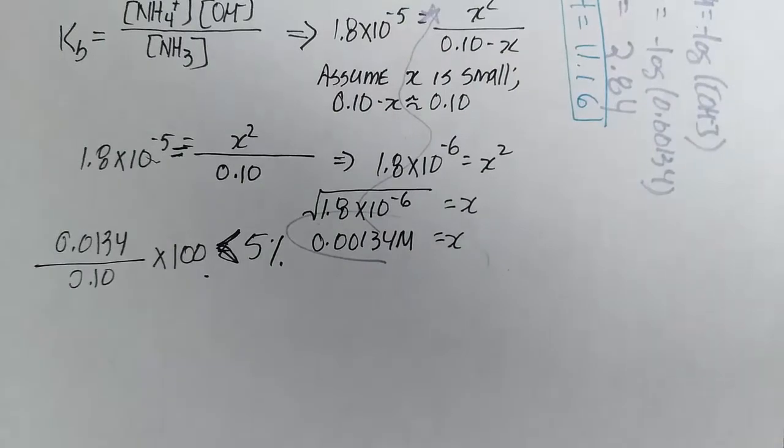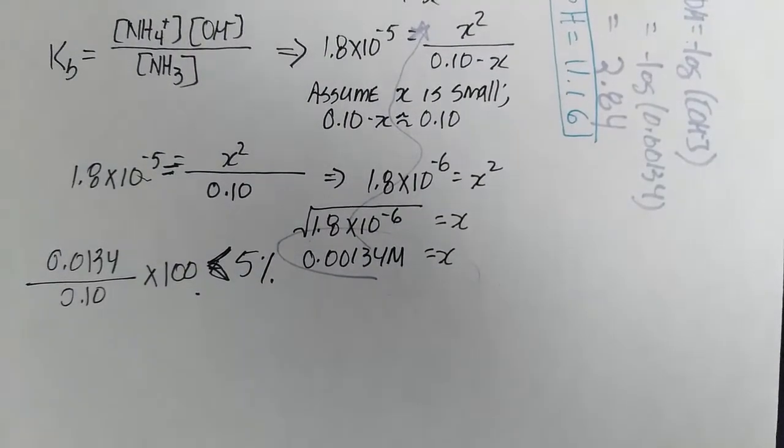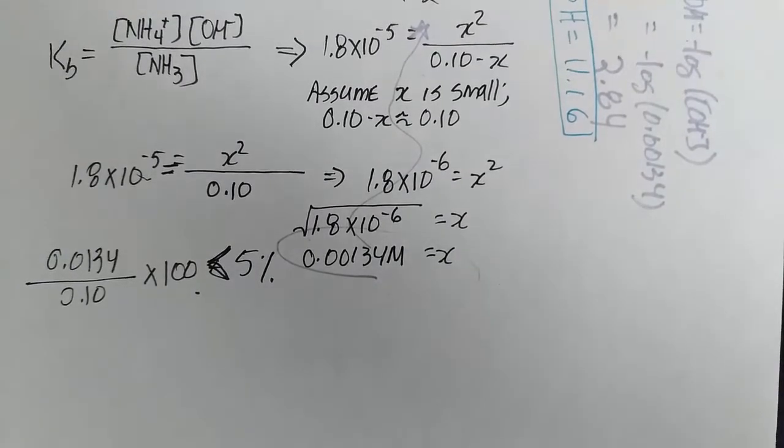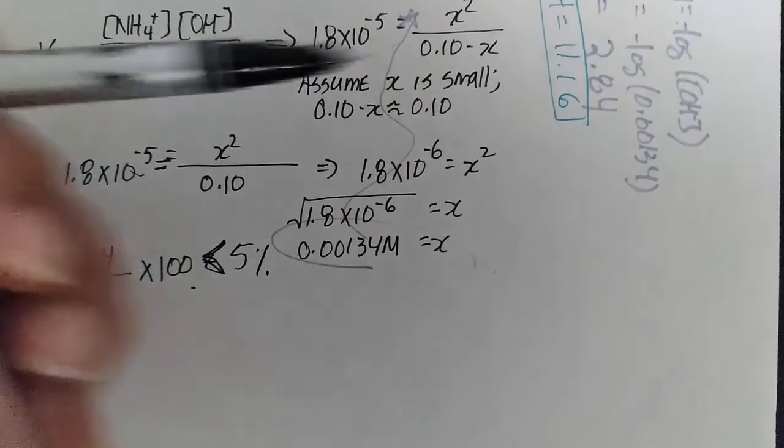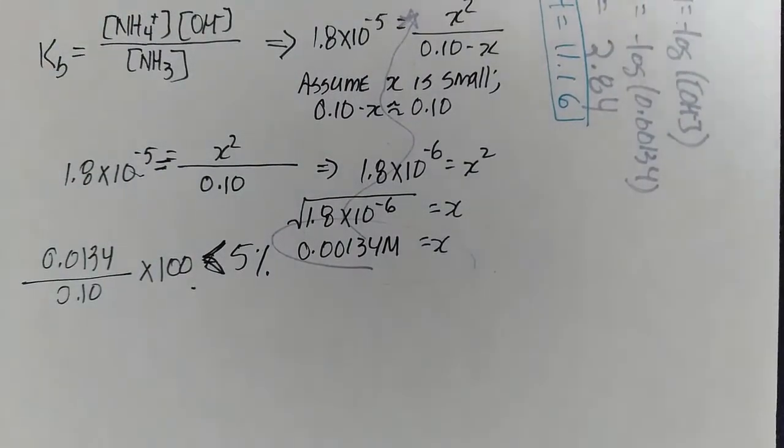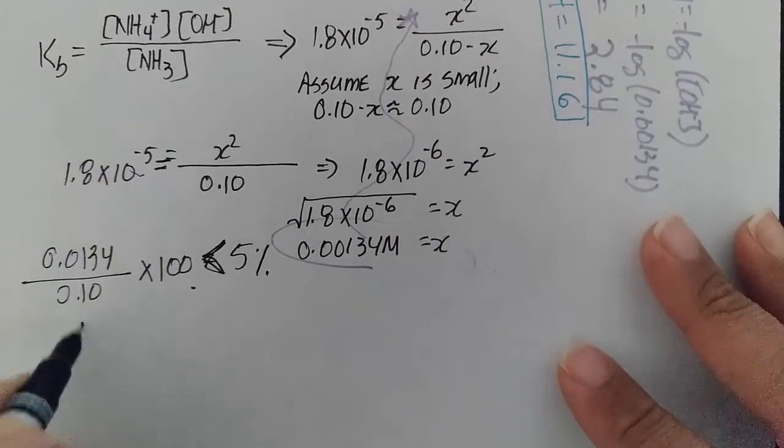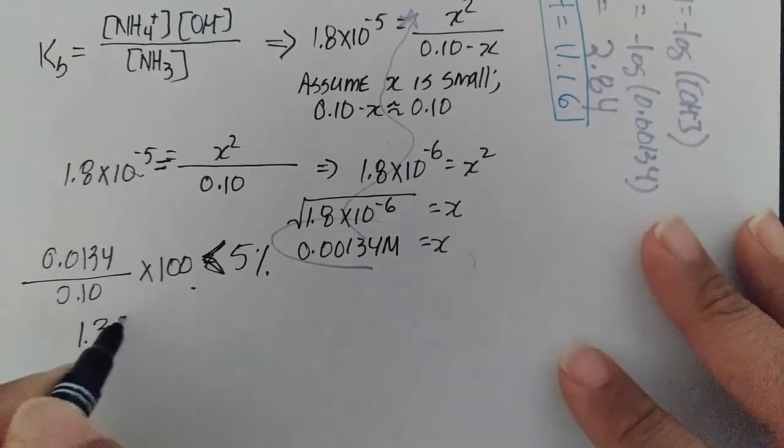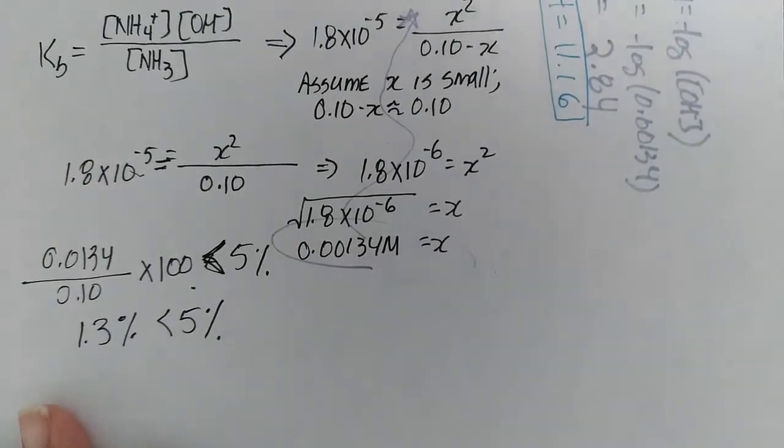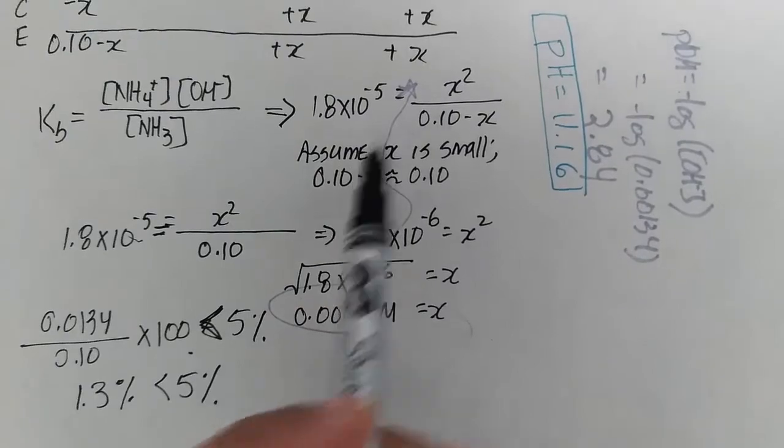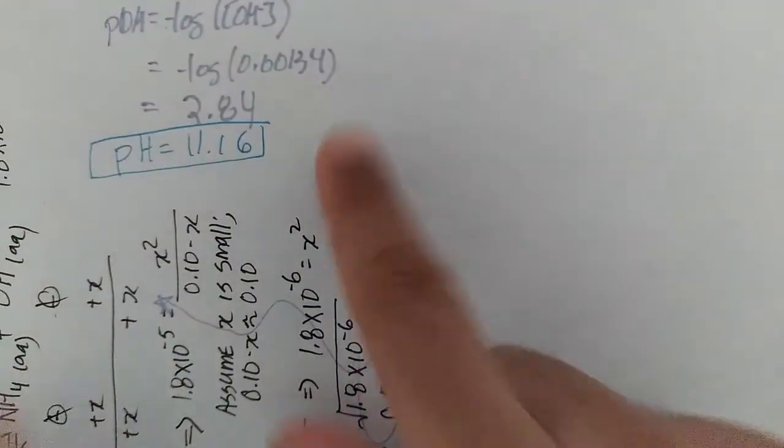We can go with it because the forward going reaction, the ionization reaction, is very small. Doing this on my calculator and multiplying by 100 to get a percentage, this is 1.3% ionization. 5% ionization is our cutoff. So we don't have to use the quadratic to solve for x in our ICE table, and this remains our right answer.